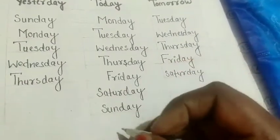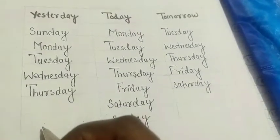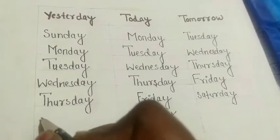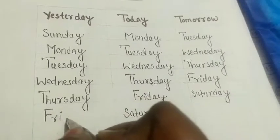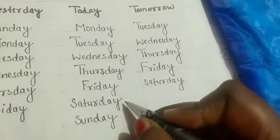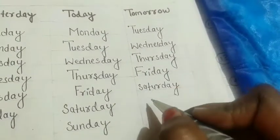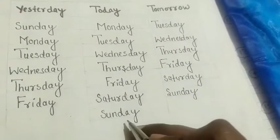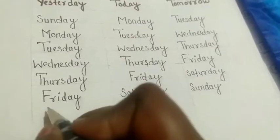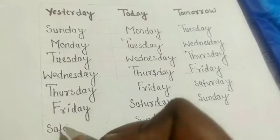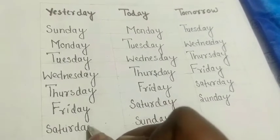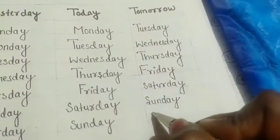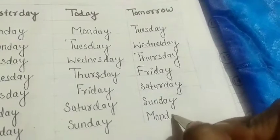Today is Saturday, so yesterday was Friday. Write it here: Friday. Today is Saturday, so tomorrow will be Sunday. Write it here: Sunday. Today is Sunday, so yesterday was Saturday, and tomorrow will be Monday. Write it here: Monday.